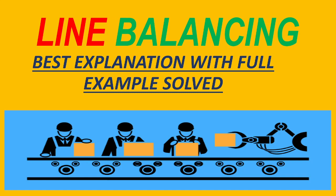Next, the question assumes an 8-hour work day — this is the operating time. They want the cycle time so that the output is 400 units per day. The desired output is 400 units and operating time is 8 hours. Since the task times are in minutes, we calculate: 8 × 60 = 480 minutes divided by 400, giving a cycle time of 1.2 minutes. For the number of workstations, the sum of all task times ΣT = 3.8, divided by cycle time 1.2, equals 3.17.